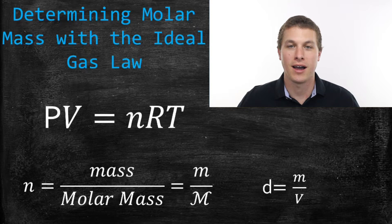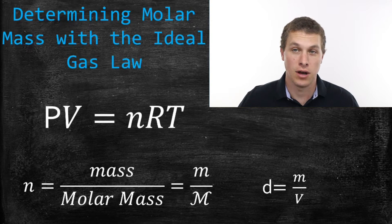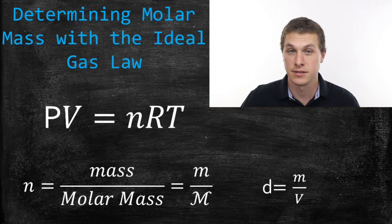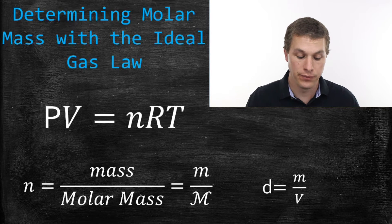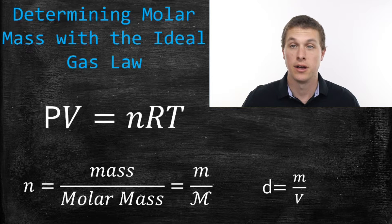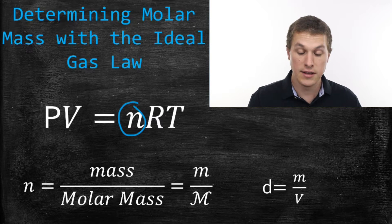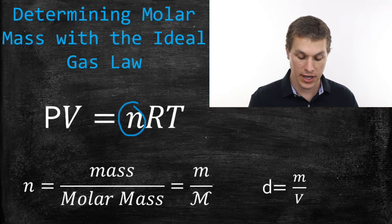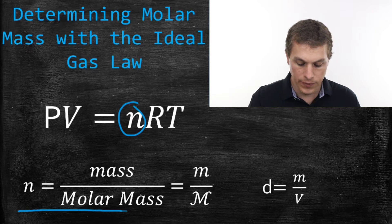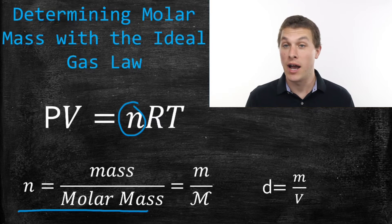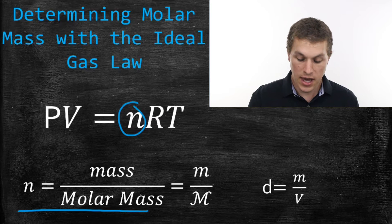Welcome to Real Chemistry. Today we're going to be talking about the ideal gas law, and we're going to use it in a different way — we're going to use the ideal gas law to actually determine the molar mass or density of a gas. If you take a look at your standard expression PV = nRT, you'll notice that hidden in the moles term n is the mass of our gas and the molar mass, because we can always calculate moles by taking our mass and dividing by our molar mass.